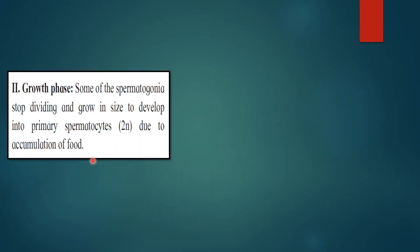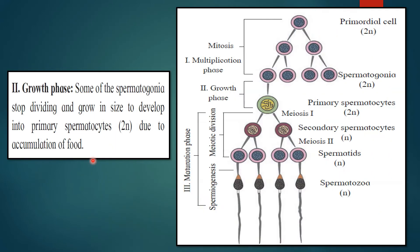The second phase is the growth phase. Some of the spermatogonia stop dividing and they grow in size to develop into primary spermatocytes (2N) due to accumulation of food.